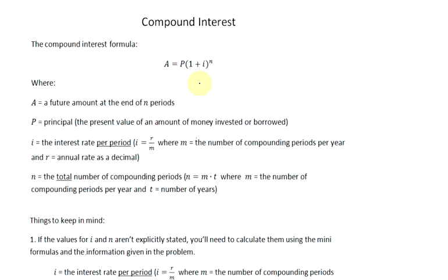The formula is A equals P times the quantity 1 plus I to the N power. A equals a future amount, P is the principal amount that we invest or borrow, and I is the interest rate per period. If we're given I explicitly, we can use it as is in the formula. However, if we are given an annual rate, we need to calculate I where I equals R divided by M — the rate divided by the number of compounding periods per year.